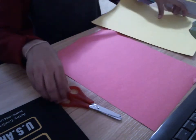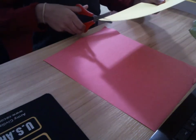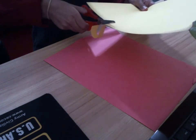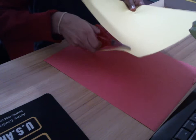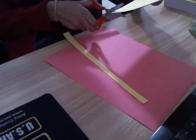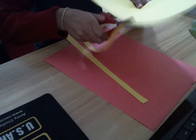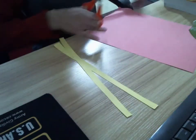We're going to start by cutting two strips of each color. Try to make them as straight as you can. When you're done, you can start cutting the other paper too. I'm going to cut the red side.